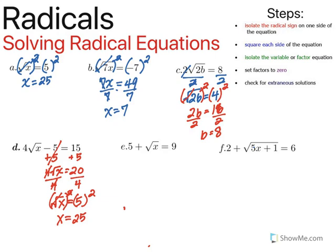Let's look at E. We have five plus the square root of x equals nine. We're going to begin by subtracting five on both sides so that we can isolate that square root. So we get the square root of x is equal to four. Now we're going to square both sides. The squared and the square root undo each other, leaving us with x equals 16.